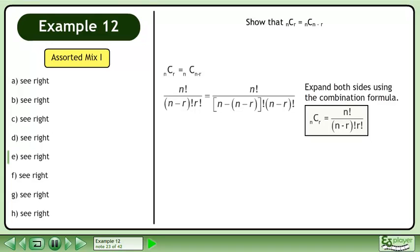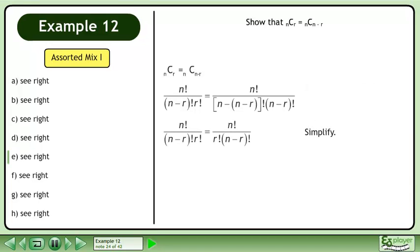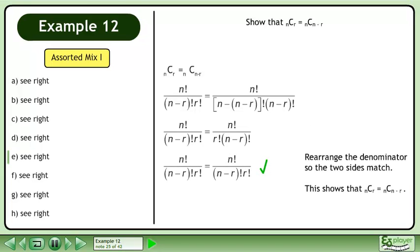Expand both sides using the combination formula. Simplify. Rearrange the denominator so the two sides match. This shows that n choose r equals n choose n minus r.